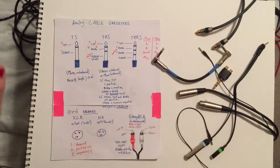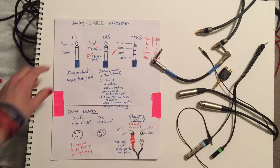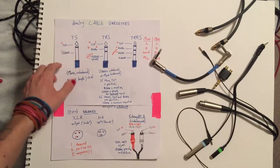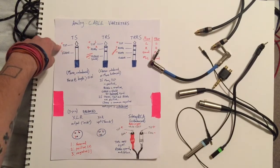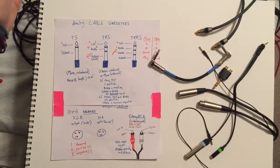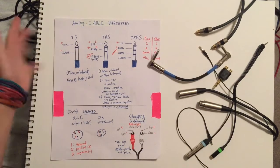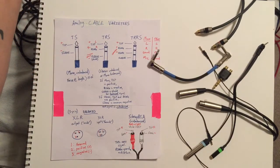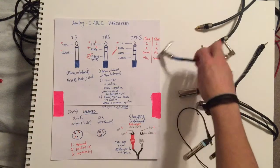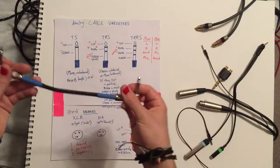They send an unbalanced signal in mono because of the configuration of these two conductors. The tip is the positive conductor so that sends the signal and the negative or sleeve is how the signal returns. Remember that each one of these cables actually completes a circuit.